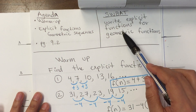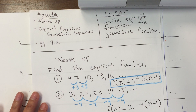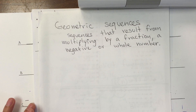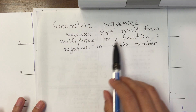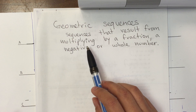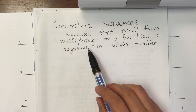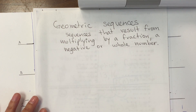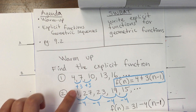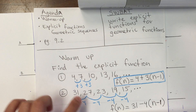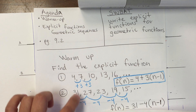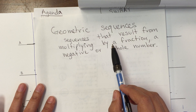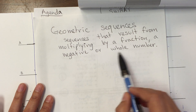For today's lesson, we're going to write explicit functions for geometric sequences. Geometric sequences result from multiplying by a fraction, a negative number, or a whole number. Before, we were adding and subtracting — those are arithmetic sequences. Now we're multiplying, and those are called geometric sequences.